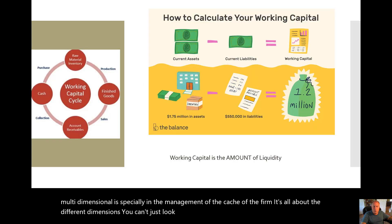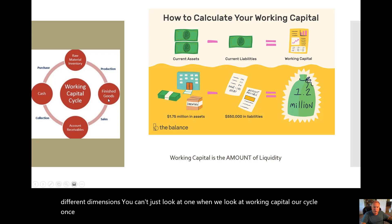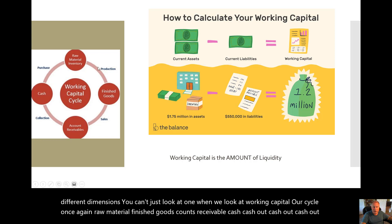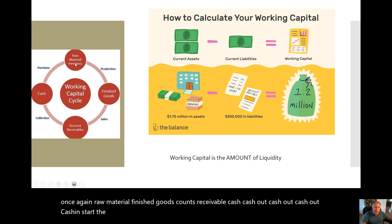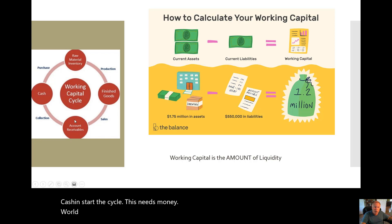When we look at working capital, here's our cycle once again: raw material, finished goods, accounts receivable, cash in, cash out, cash out, cash out, cash in — start the cycle. This needs money or cash liquidity throughout. There needs to be sufficient liquidity for it to run and to grow.